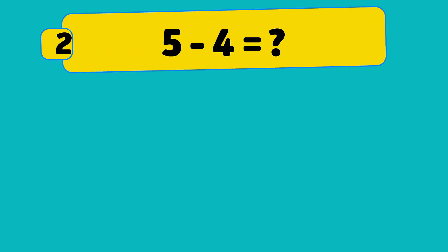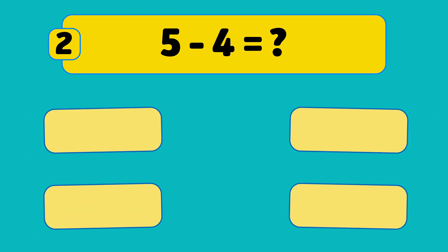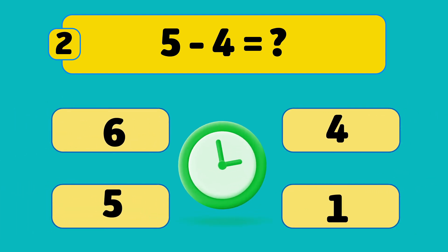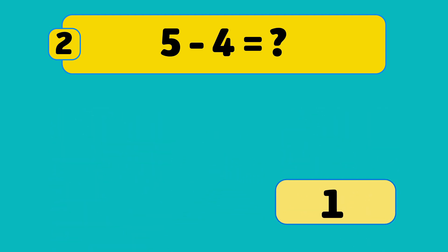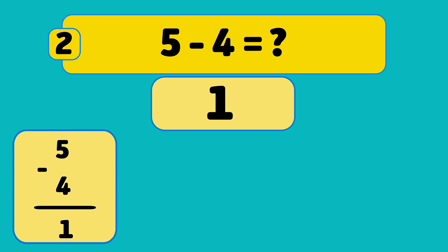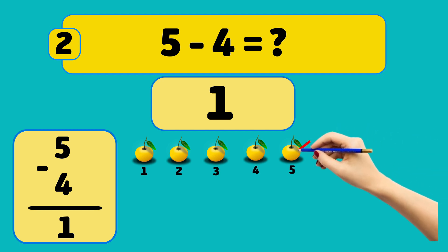What is 5 minus 4? The answer is 1! If you have 5 oranges and remove 4, you're left with just 1 orange.